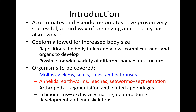I'm going to cover the molluscs, the annelids, and the lophophorates today, and then part two will be the arthropods and the cnidarians. Molluscs include clams, snails, slugs, and octopi. Annelids are going to be earthworms, leeches, and seaworms.